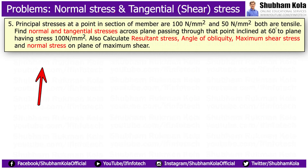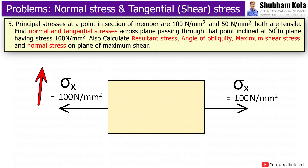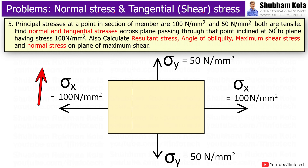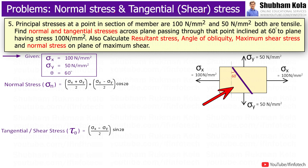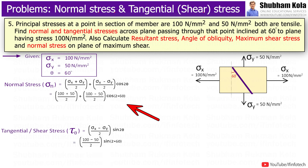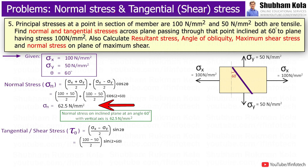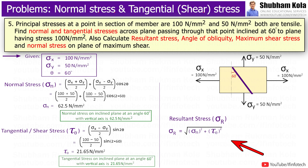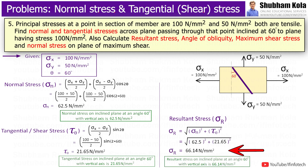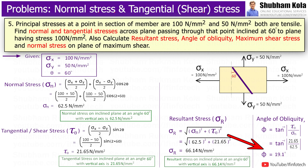For the next problem: the principal stresses at a point in a section of a member are 100 N/m² and 50 N/m², both tensile. Find normal stress, tangential stress, resultant stress, angle of obliquity, maximum shear stress, and normal stress on maximum shear across a plane inclined at 60 degrees to the plane having stress 100 N/m². With theta = 60 degrees, normal stress is 62.5 N/m² and tangential shear stress is 21.65 N/m². Resultant stress sigma_r = √(sigma_n² + tau_theta²) = 66.14 N/m². Angle of obliquity phi = 19.1 degrees.